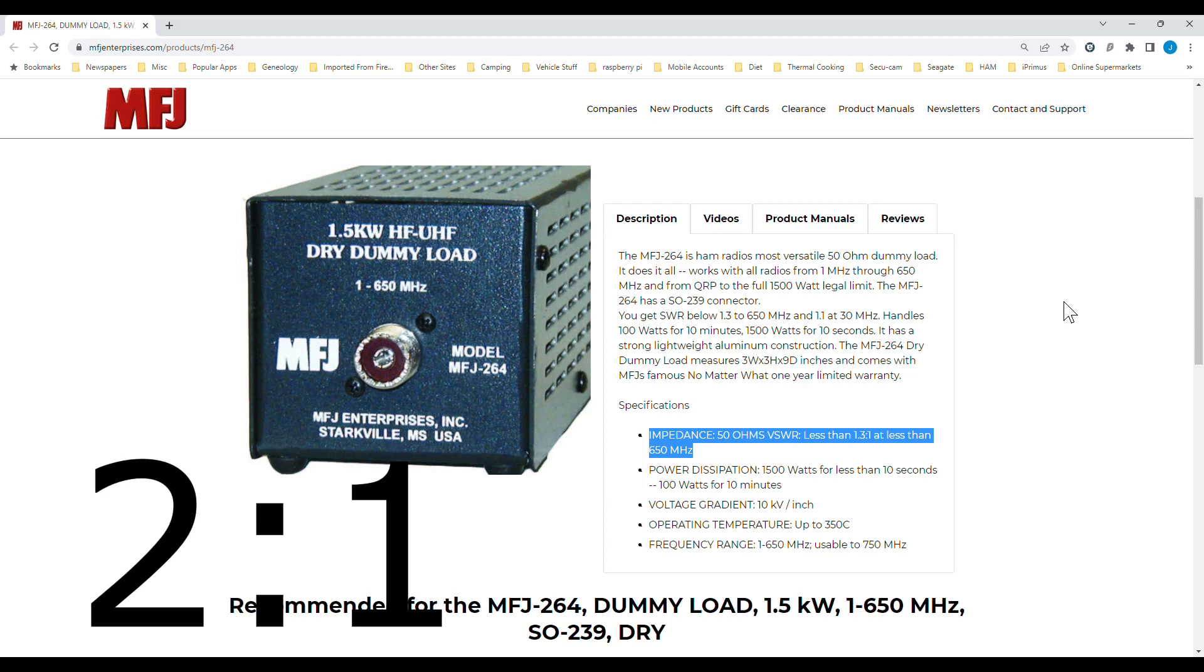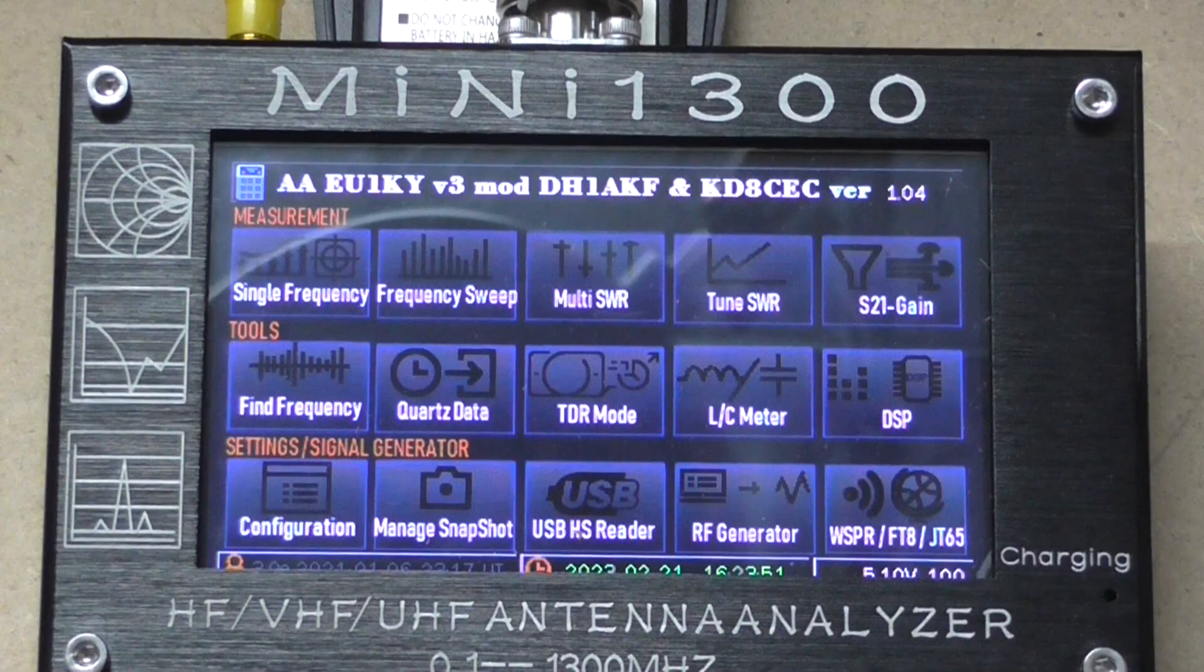But for what it is and for the frequencies I use, that dummy load will be fine. Anything above that, well there's nothing really at 70 centimeters we're still under 2 to 1. There's nothing wrong with that really, but it would be nice to be flat right across as they sort of suggested it should be.